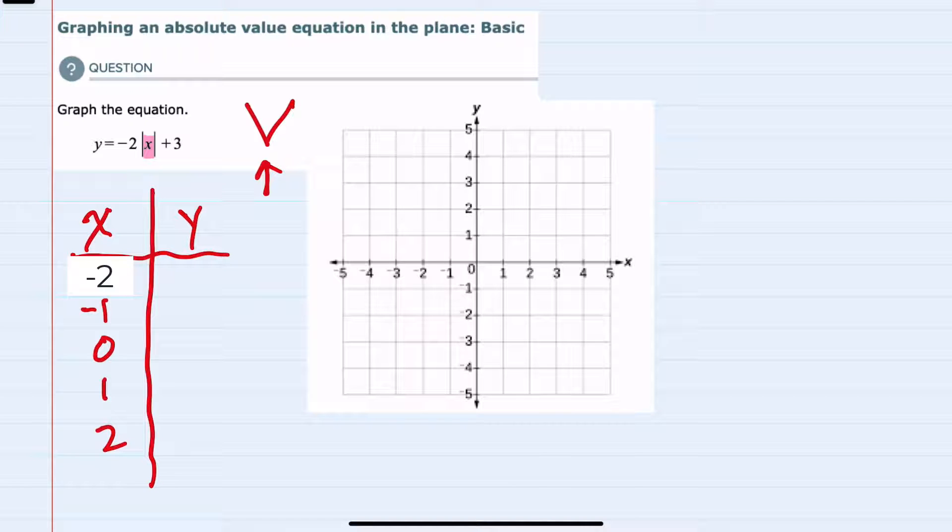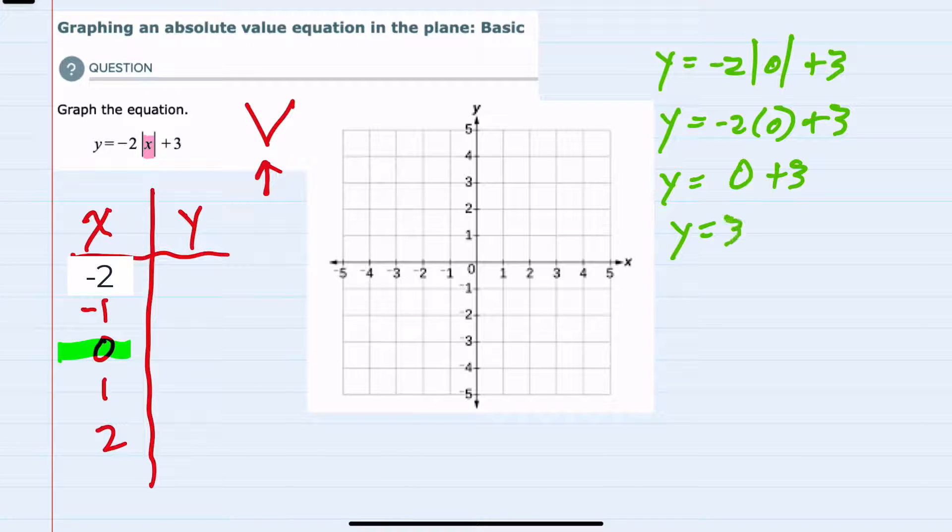Plugging those values in, I'll start with x equals 0. When we plug that value in we have y equals negative 2 times the absolute value of 0 plus 3. Following the order of operations, the absolute value is a grouping symbol, so the absolute value of 0 is 0. Next we move on to multiplication. Negative 2 times 0 is also 0, so we have y equals 3 when x is 0. So far we have the point (0, 3).